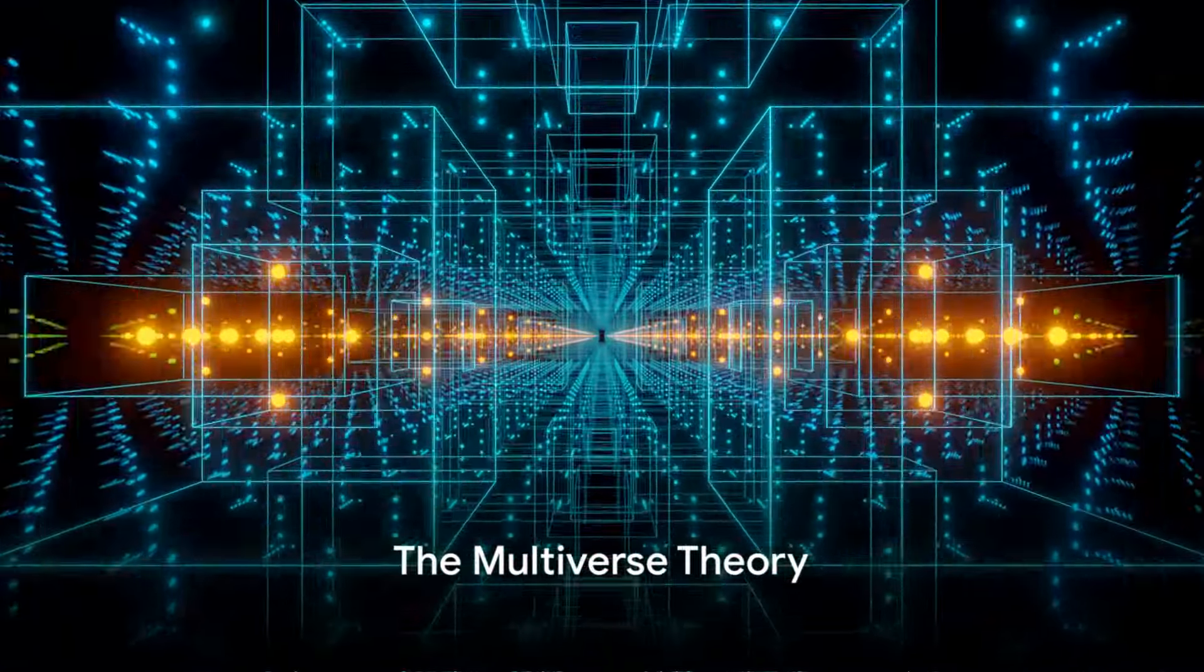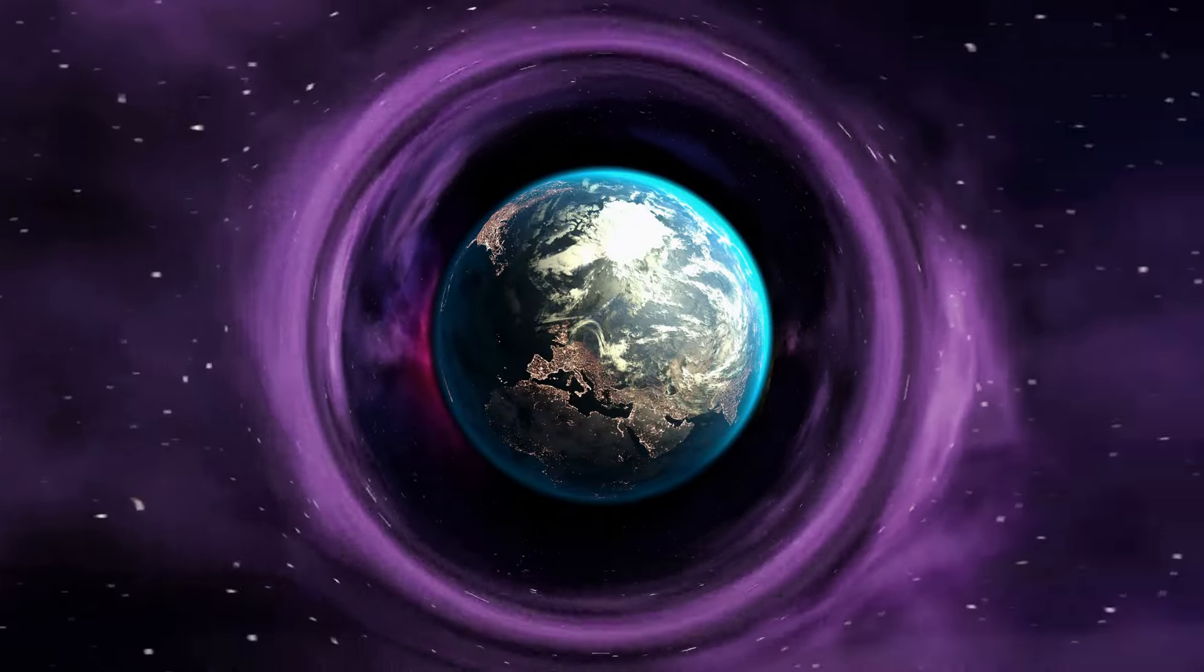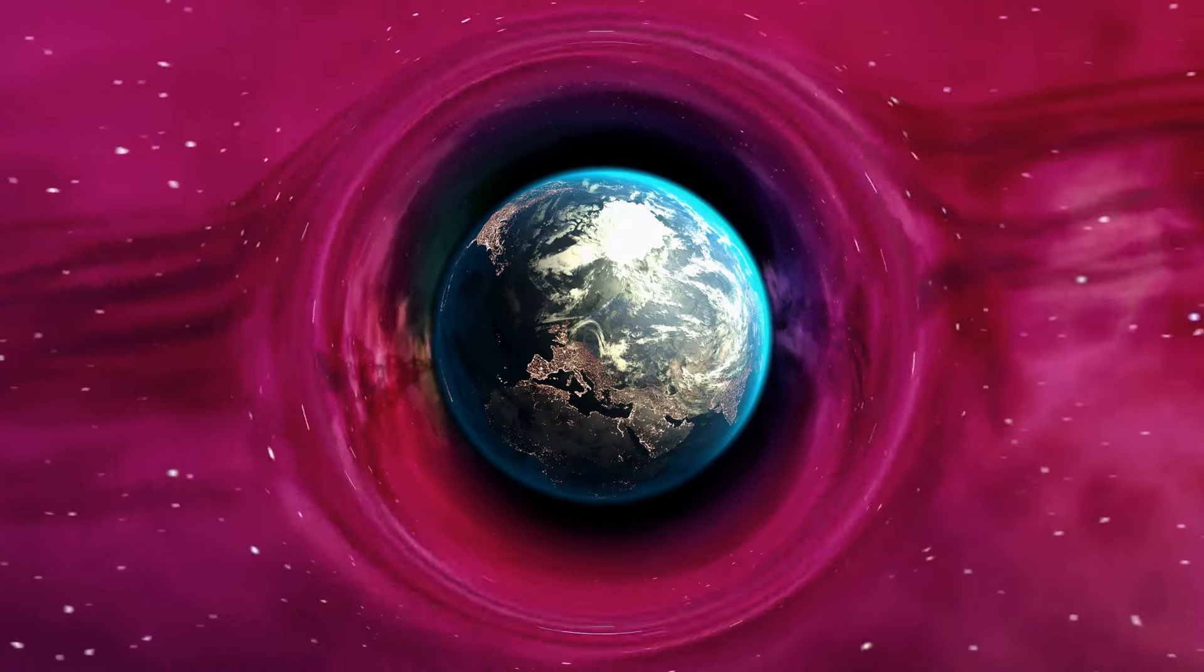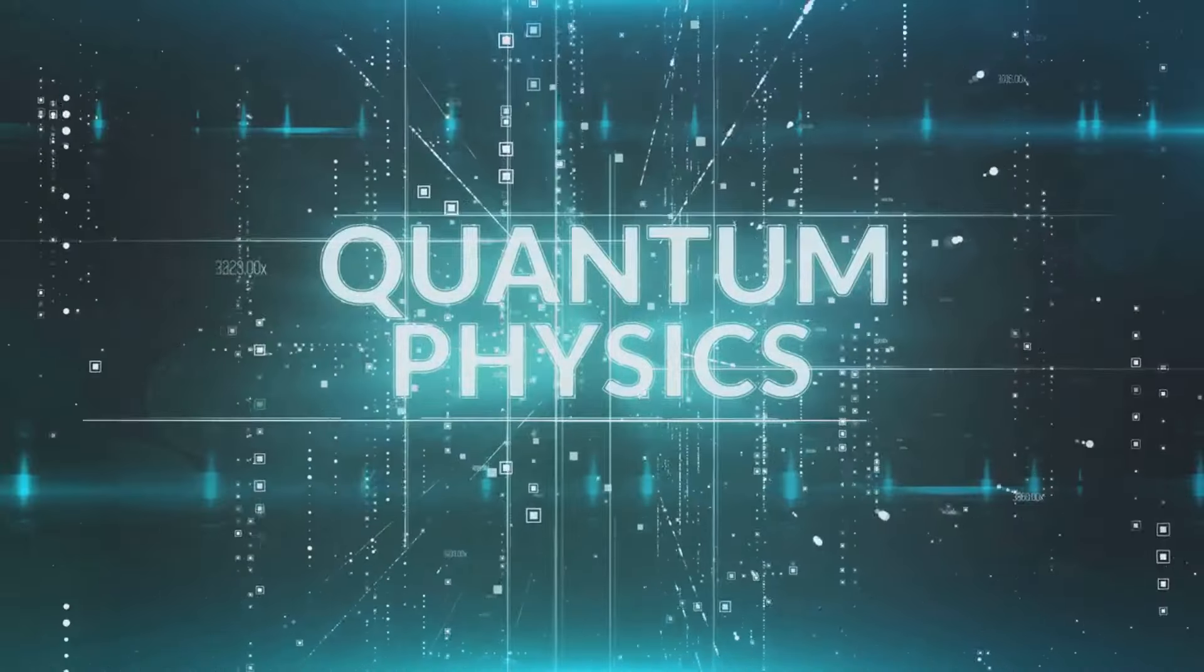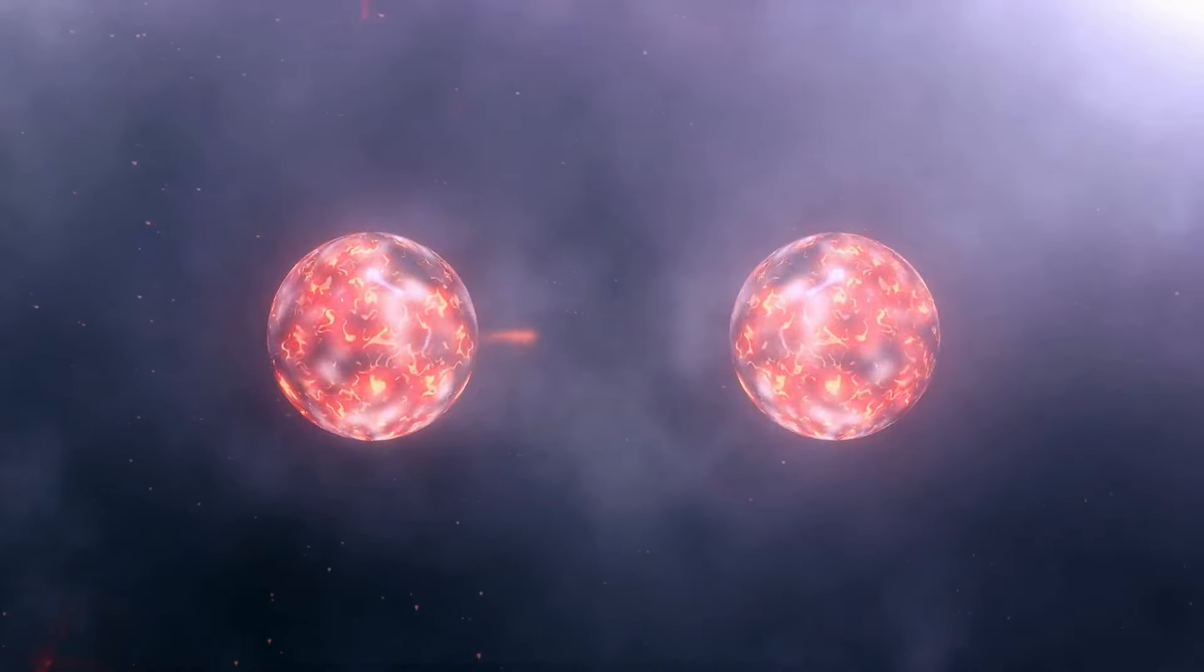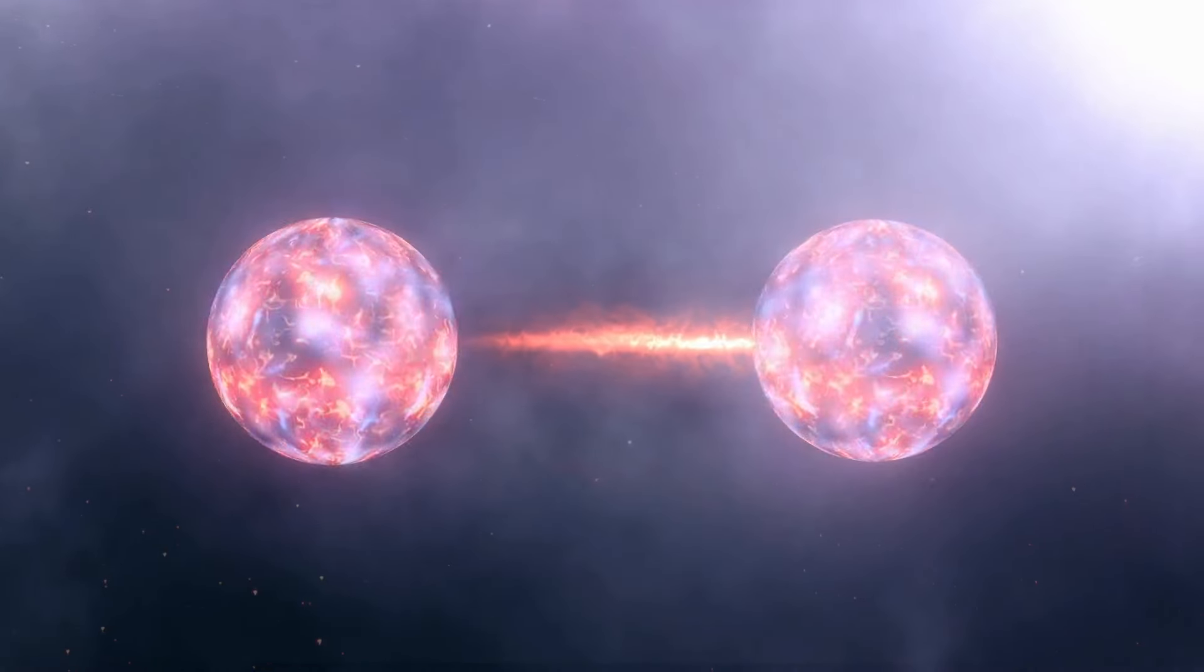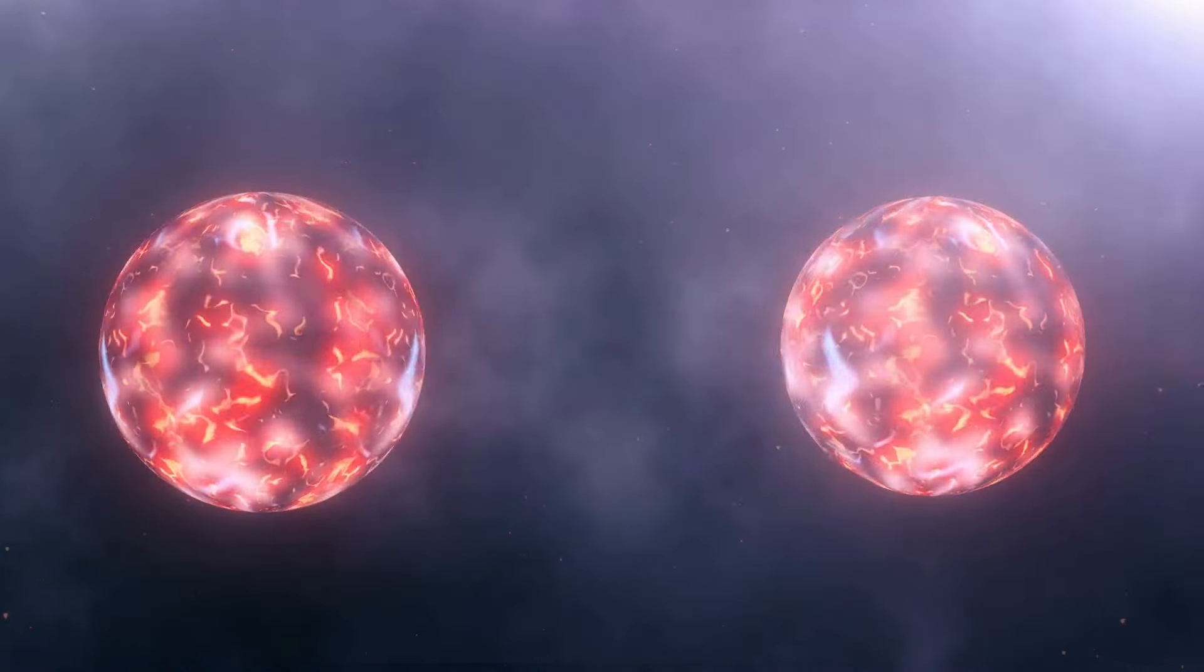What if our universe is just one of many, each with its own laws of physics and realities? Imagine a cosmic landscape teeming with a virtually infinite number of universes, each distinct, each its own cosmos. This is the essence of the multiverse theory. The multiverse theory is an audacious idea that has its roots in quantum mechanics and string theory. To begin with, quantum mechanics, the mind-bending branch of physics that deals with the smallest particles in the universe, has a strange feature called superposition. This means that a particle can exist in all its theoretically possible states at once.